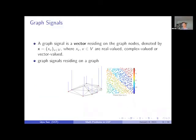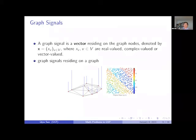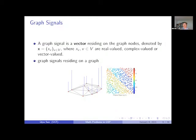A graph signal is simply a vector residing on the graph nodes: x = {x_v} indexed by the vertex set. The entry x_v at vertex v is a real or complex number, and could also be a vector value. When we talk about velocity at each vertex, there will be a vector-valued signal. Here are two examples: on the right is a piecewise polynomial signal with four pieces, each piece being a polynomial. You can see some jumps between pieces, and we will use that property later.